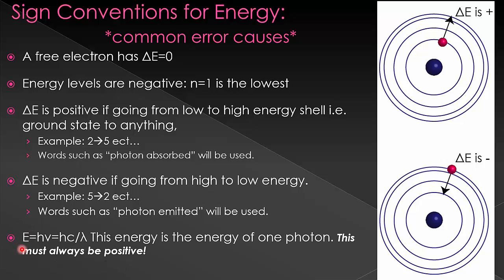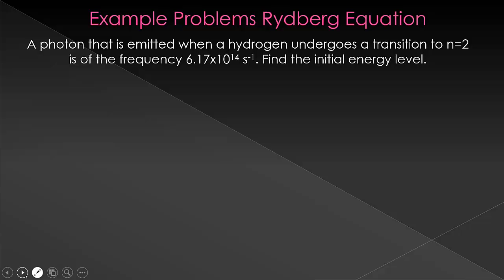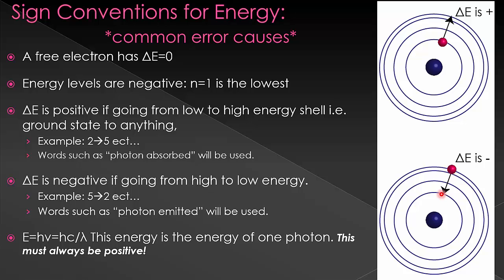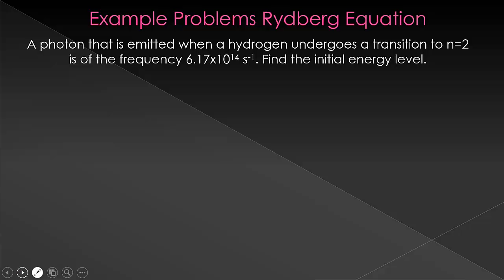Now let's look at the equation E equals h nu equals HC over lambda, either one of those. Notice frequency and wavelength will always have to be positive, which means that this E is always going to be positive. That makes sense from a math standpoint, as I just explained, but it also makes sense from a logic standpoint. This is the energy of a single photon. A single photon cannot have a negative energy, and therefore this must always be positive. This comes into play when you're talking about problems when you're going from a high energy down to a lower energy.